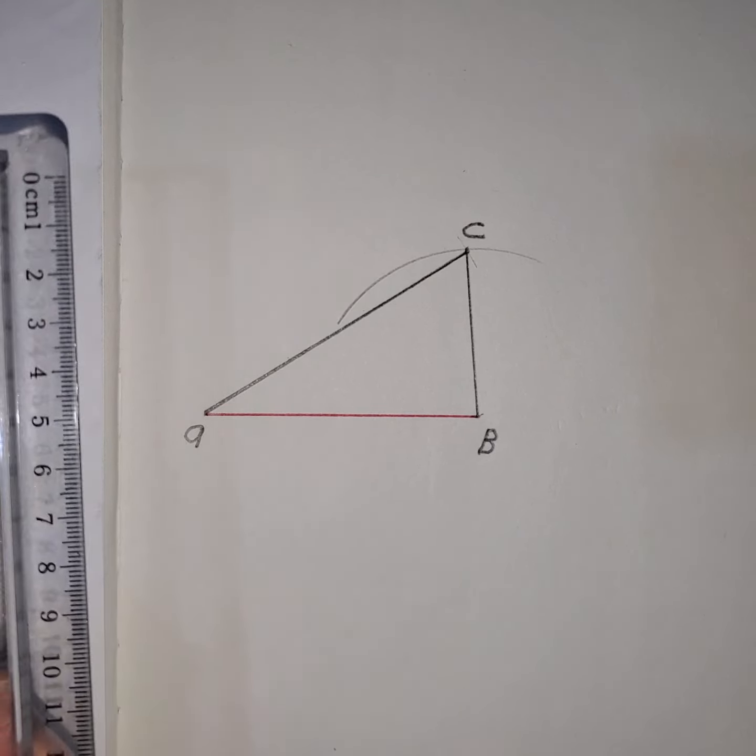The next step is to draw a line parallel to the extension lines. You want to ensure that this distance should not be more than 10 millimeters. So I draw that dimension line like that.